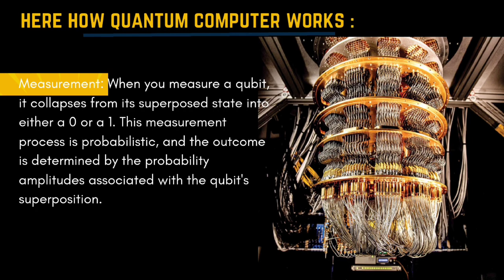Here you can see the actual picture of a quantum computer. The last concept — measurement: when you measure a qubit, it collapses from its superposed state into either a zero or a one. This measurement process is probabilistic, and the outcome is determined by the probability amplitudes associated with the qubit's superposition.